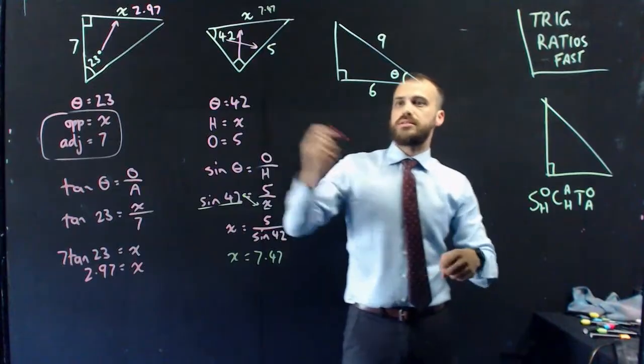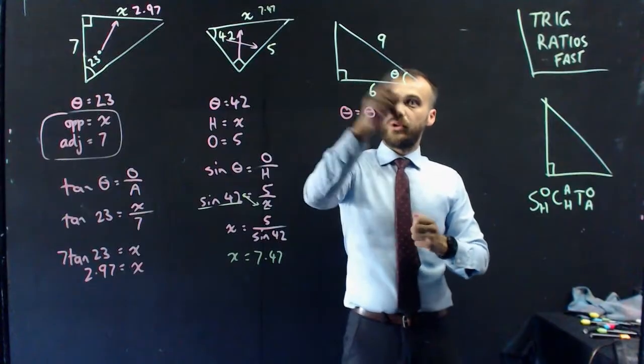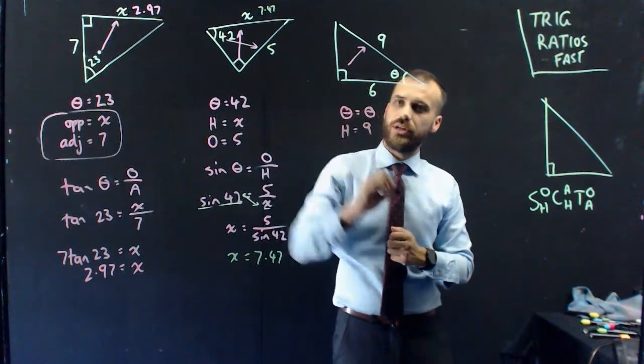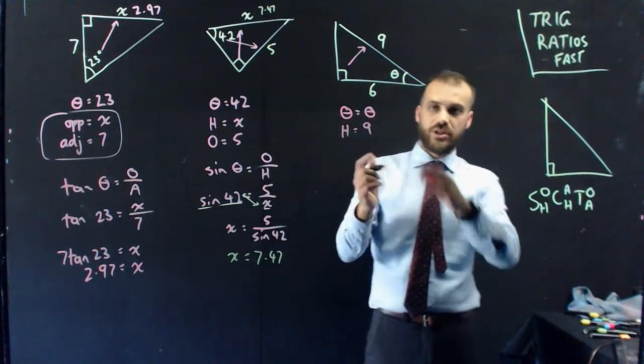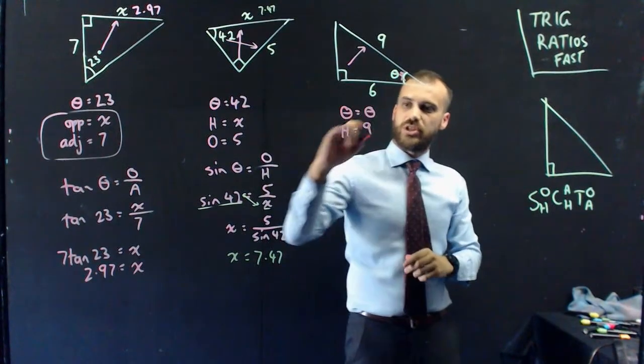Last one of these, theta. I don't know what theta is. They haven't told me. Now, the hypotenuse is the longest side opposite the right angle. So the H is equal to 9. And the adjacent is the side next to the angle that you can touch if you were standing here. So that's the adjacent side.